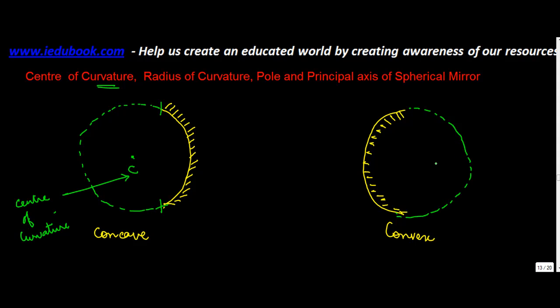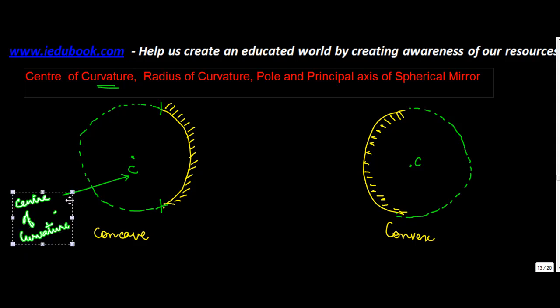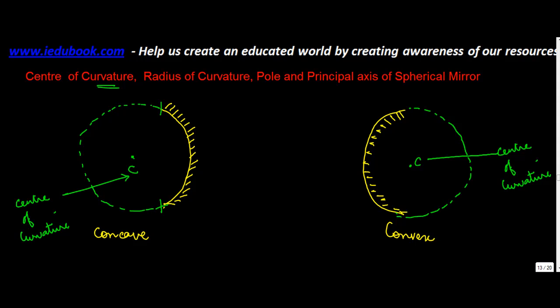Similarly let's assume this is a sphere and this is the center, call it C. This is again the center of curvature of this particular circle. So it's the center of the hollow sphere of which this particular mirror is a part.